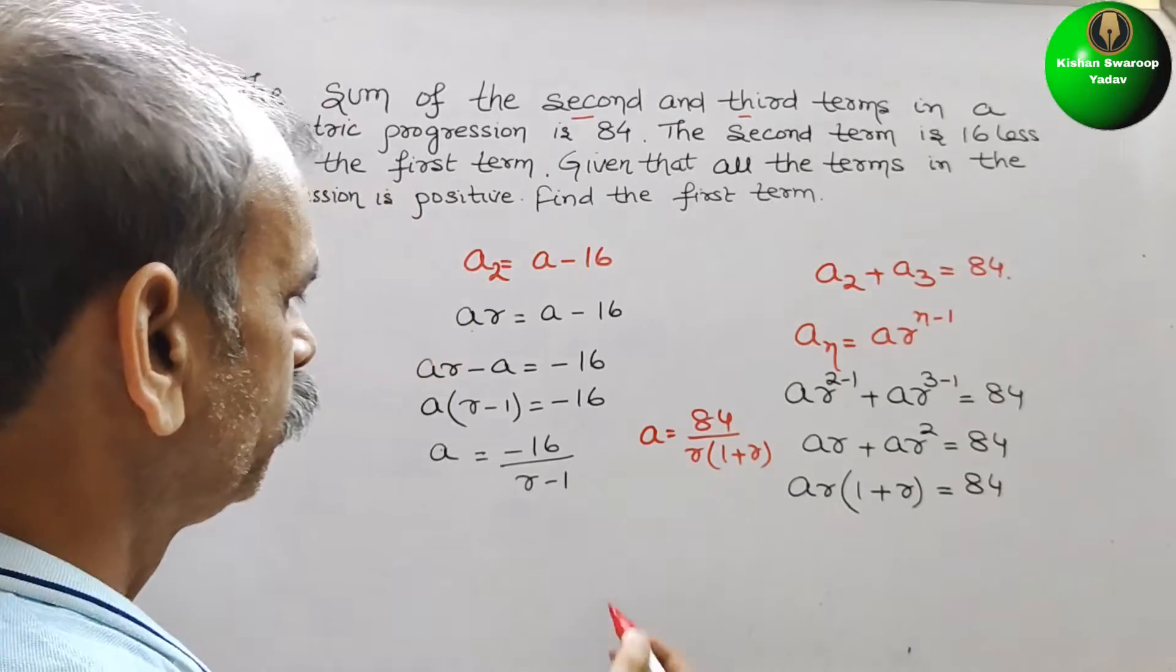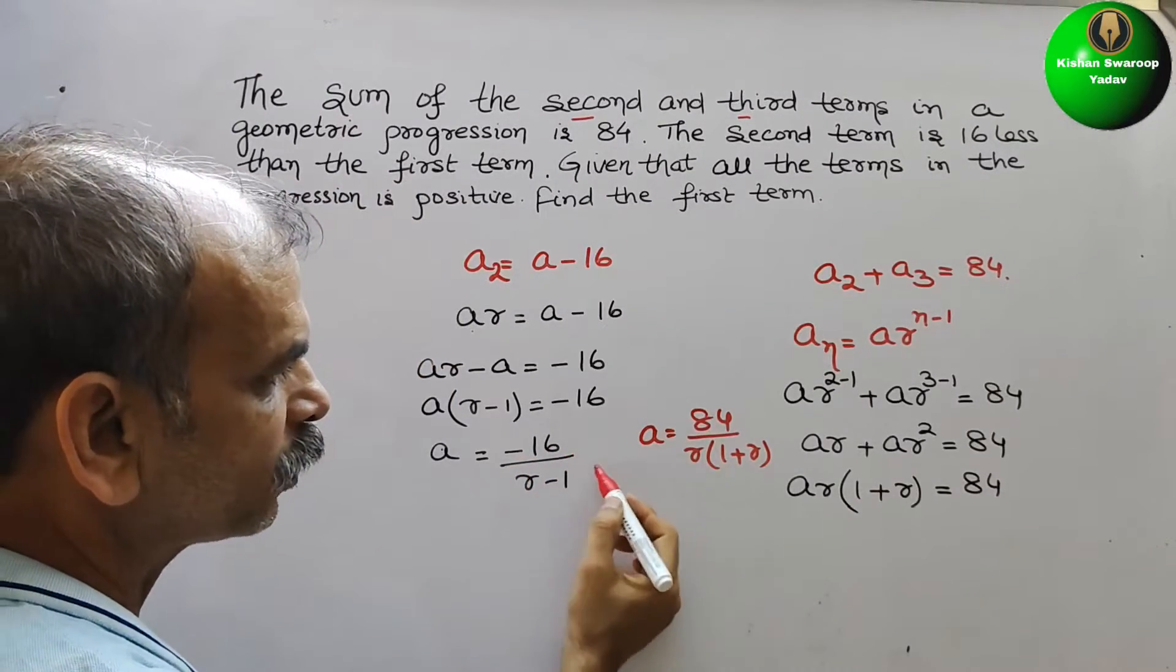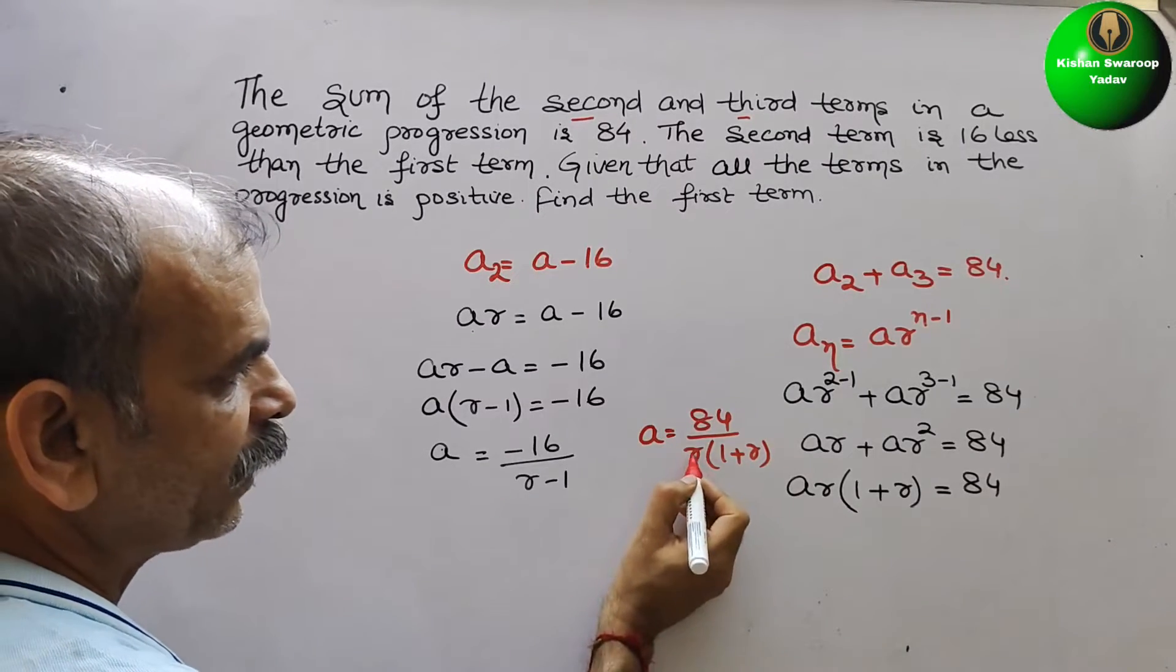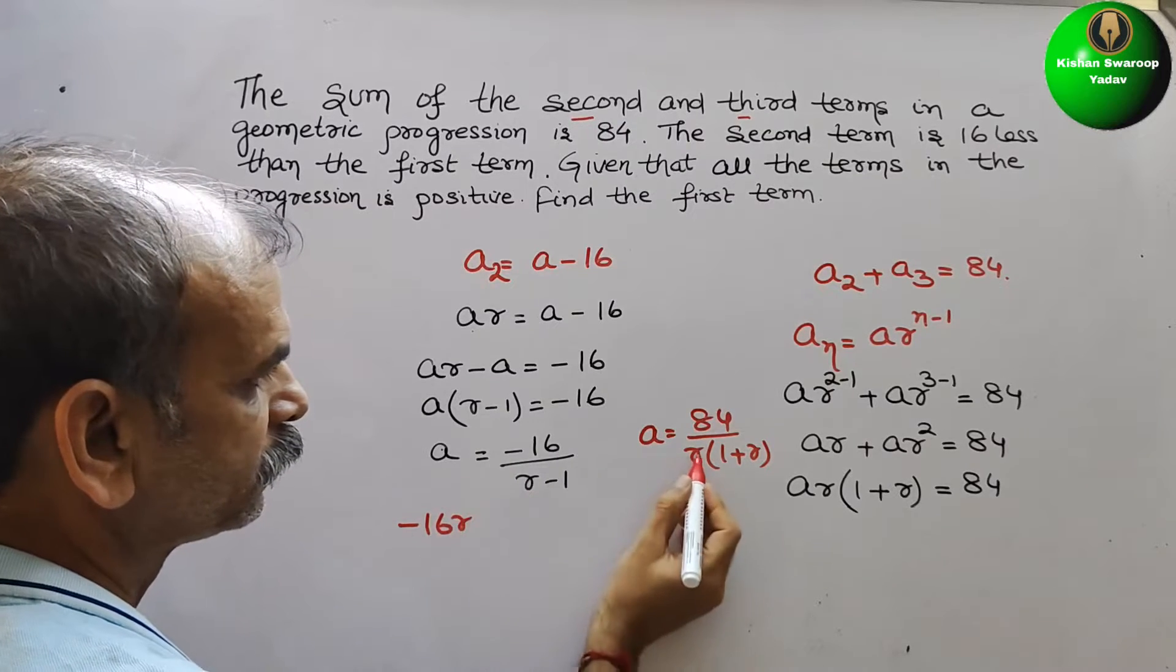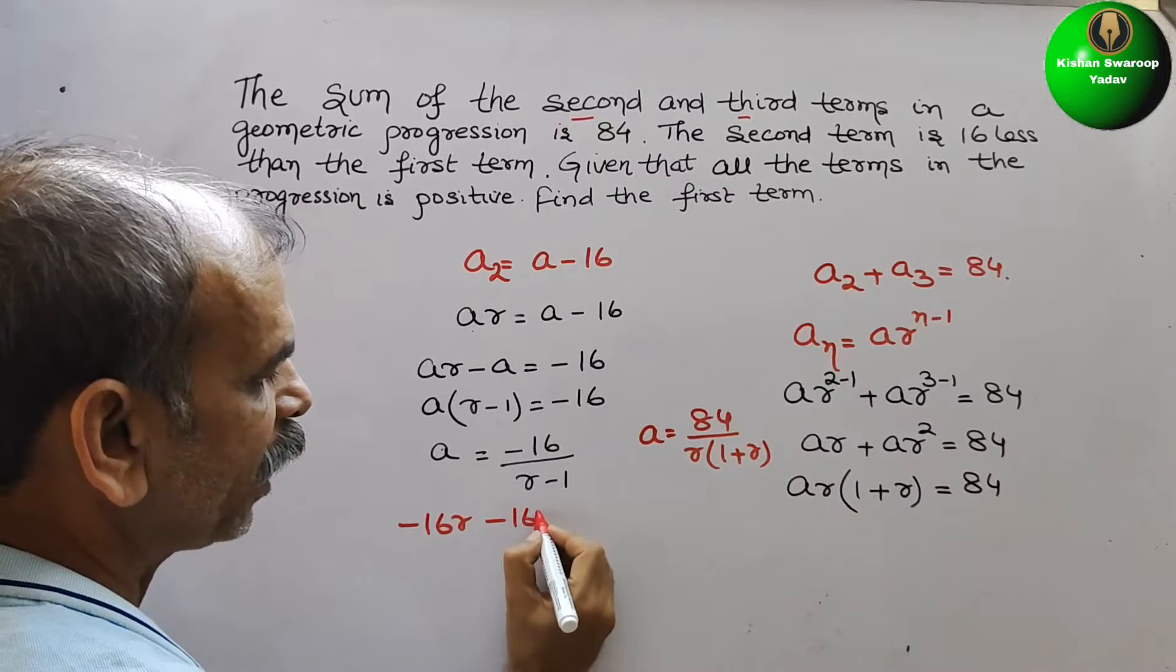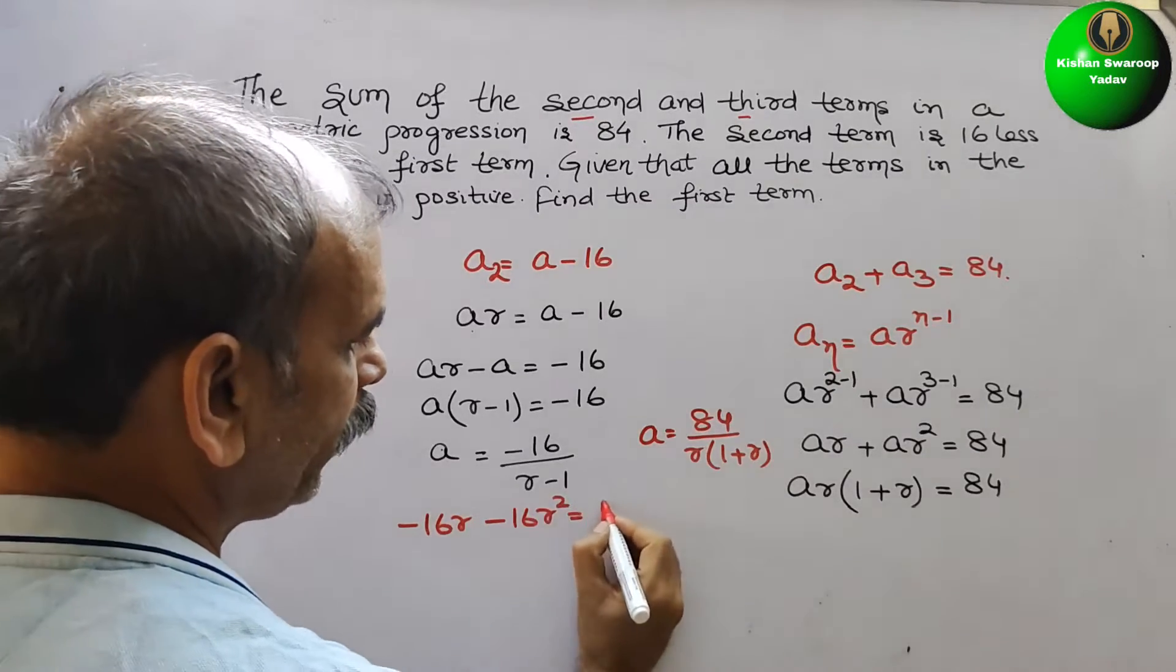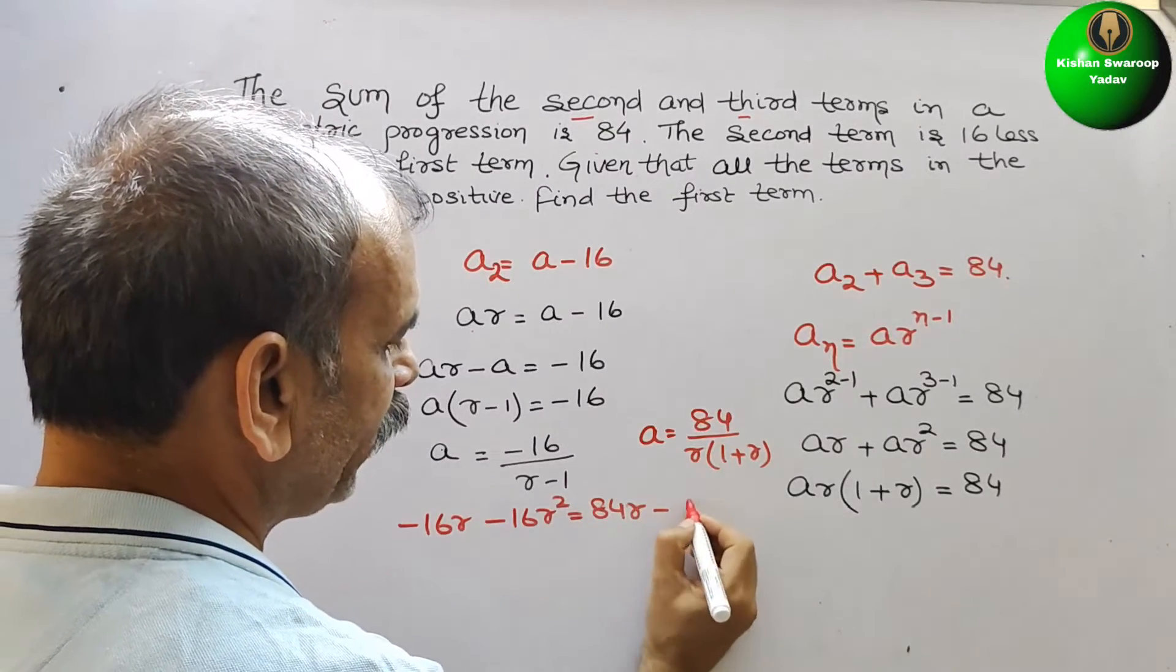Solve this. So here we will get what? This is equal to this. Now just cross multiply them.